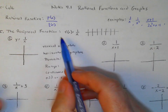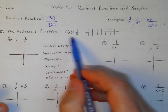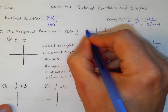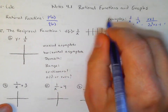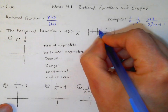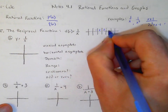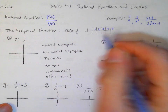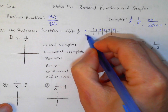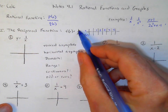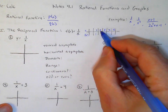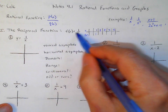The first one we're going to talk about is the reciprocal function, which is just 1 over x. Let's take some random numbers — 1, 2, 3, 4, 5. This is my x and this is my f(x), my y. If I put 1 in here, 1 divided by 1 is 1. Put a 2 in there, 1 divided by 2 — f(x) would equal 1/2.